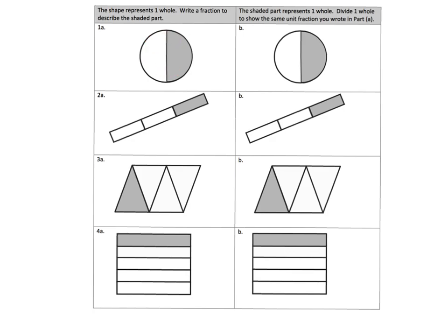I'm going to just kind of go straight down and identify what fraction is shaded. This is a half. This is a third. Teachers and parents, you may want to pause the video and let your students do the thinking instead of making me do all the work. But what about this one — this is a fourth. And then what is this one? One, two, three, four, five — so this is a fifth. There's our shaded parts and what fraction each shaded part is.